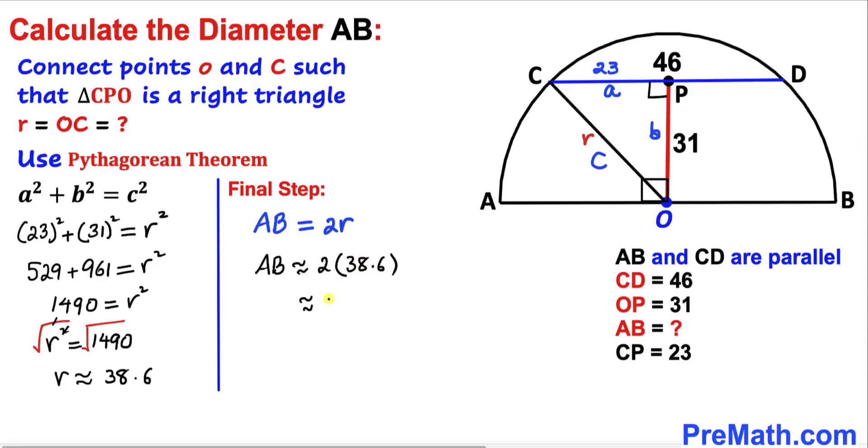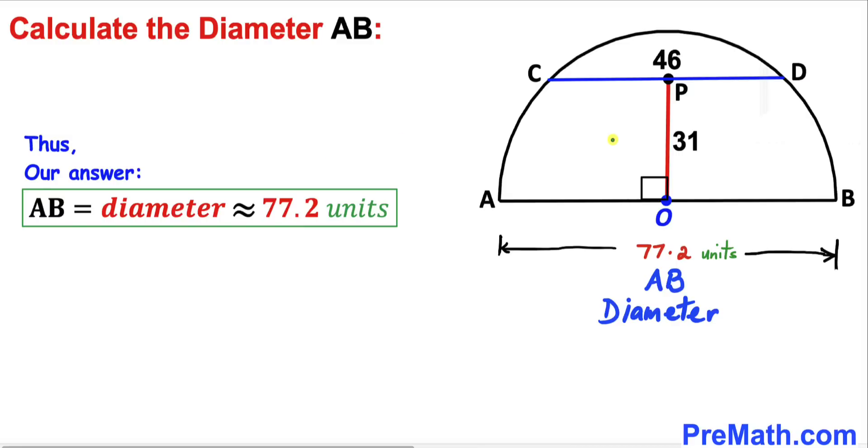Thus, the diameter of this semicircle turns out to be approximately 77.2 units, and that's our final answer.